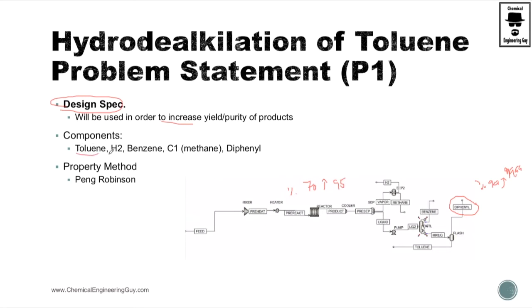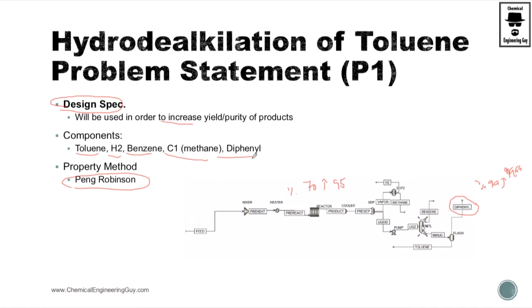The components are: toluene, hydrogen gas, benzene, methane, and diphenyl. For the property method, the recommended one is Peng-Robinson, because we are operating at relatively high pressures and all these components are non-polar.